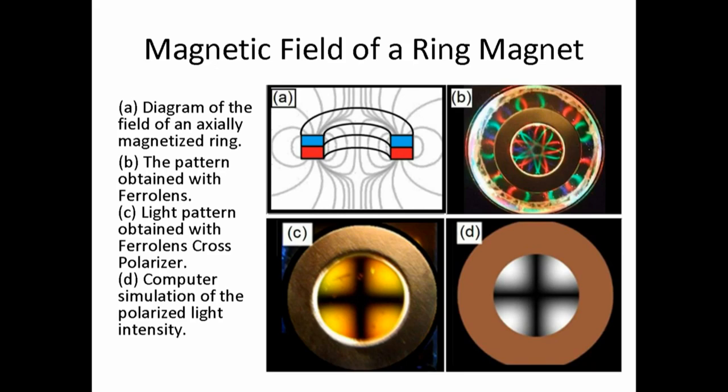In figure A, we have the vector field of a ring magnet magnetized through the thickness. In figure B, we have the ferrocell image of the same ring magnet with LEDs around the perimeter. In the C figure, we have the real-world image of the cross polarizer with its single light source and the ring magnet. In the D figure, we have the computer simulation. You can see there's high correlation between what the computer says we should be getting and what we're actually getting.